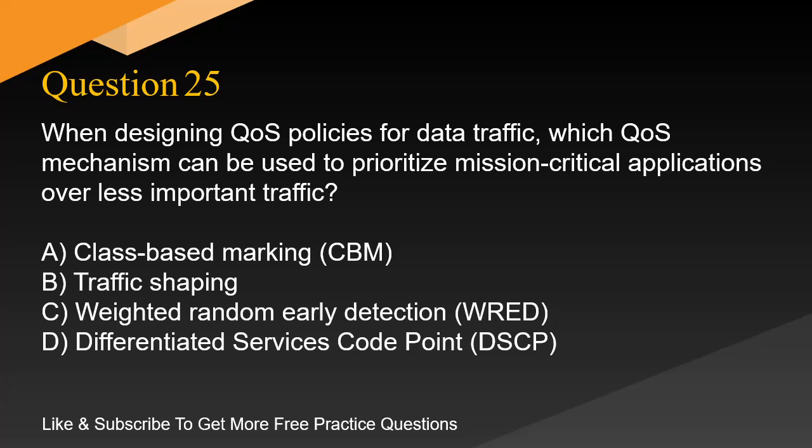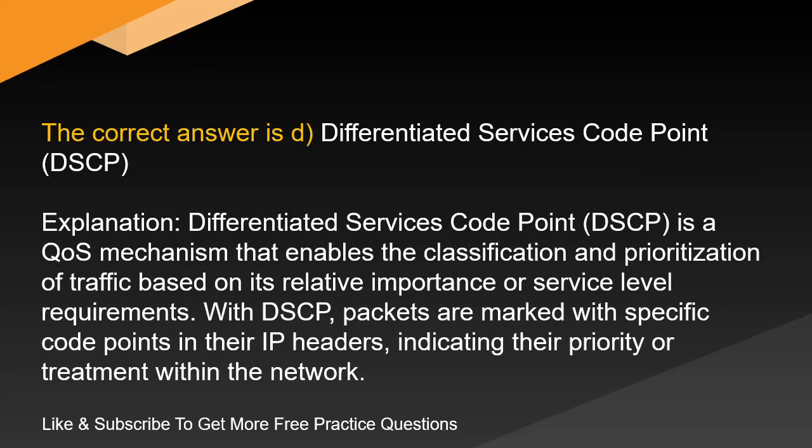Question 25. When designing QoS policies for data traffic, which QoS mechanism can be used to prioritize mission-critical applications over less important traffic? A. Class-based marking, CBM. B. Traffic shaping. C. Weighted random early detection, WRED. D. Differentiated services code point, DSCP. The correct answer is D: Differentiated Services Code Point, DSCP. DSCP is a QoS mechanism that enables the classification and prioritization of traffic based on its relative importance or service-level requirements. With DSCP, packets are marked with specific code points in their IP headers, indicating their priority or treatment within the network.